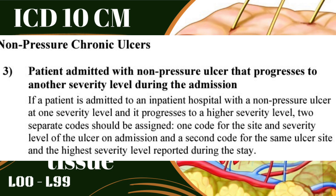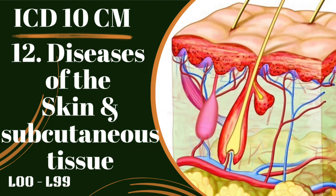Non-pressure chronic ulcers are not caused by prolonged pressure — they are always related to something else, making them manifestations of an underlying etiology. Because of a cause such as venous or arterial insufficiency, the non-pressure ulcer manifests. When coding non-pressure ulcers, always also code the etiology — the reason that caused the non-pressure ulcer. Do not focus solely on the non-pressure ulcer diagnosis code; also code the underlying cause.